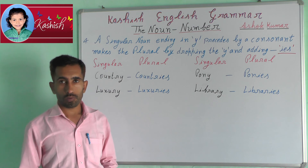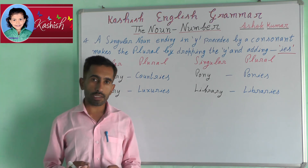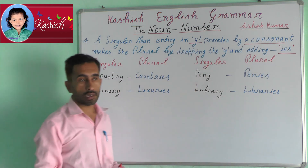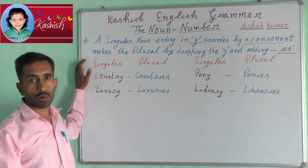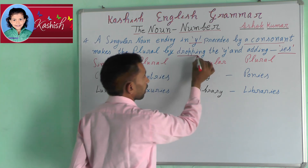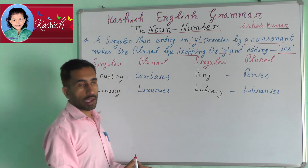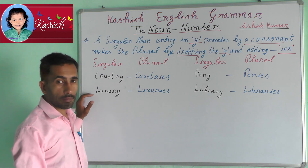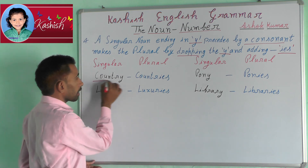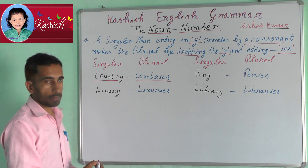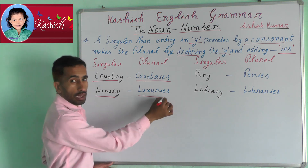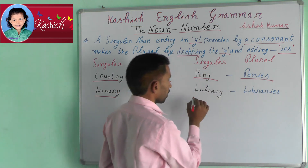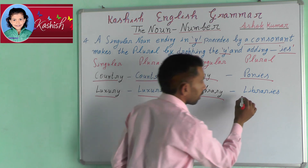Fifth rule: a singular noun ending in Y preceded by a consonant makes the plural by dropping the Y and adding IES. For example: country → countries, luxury → luxuries, pony → ponies, library → libraries.